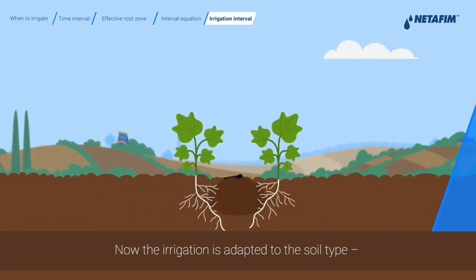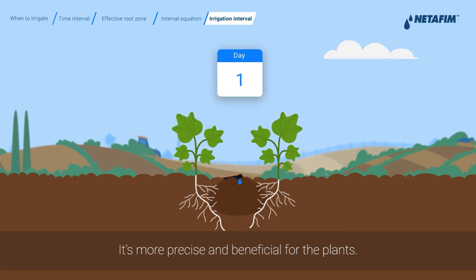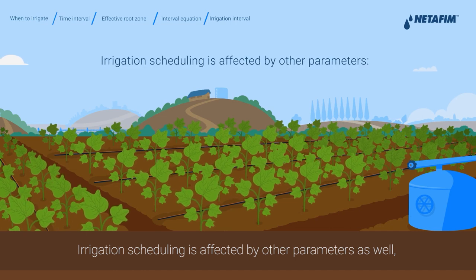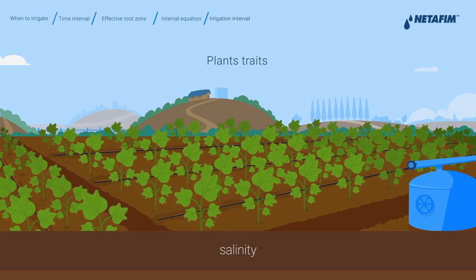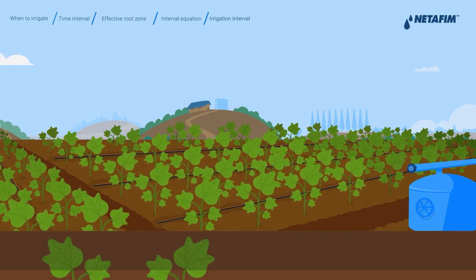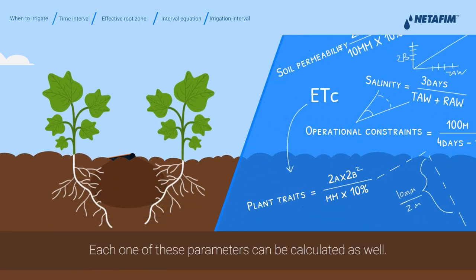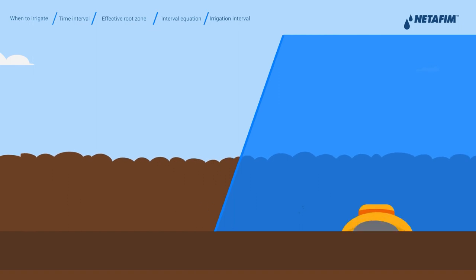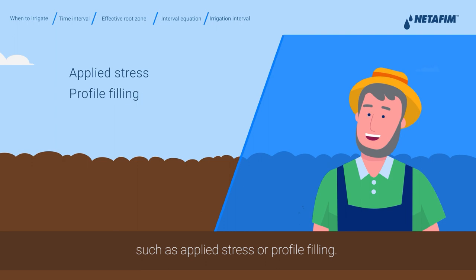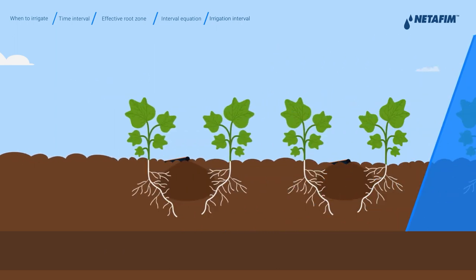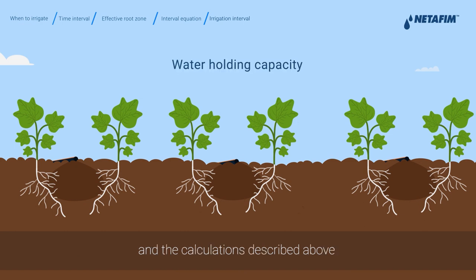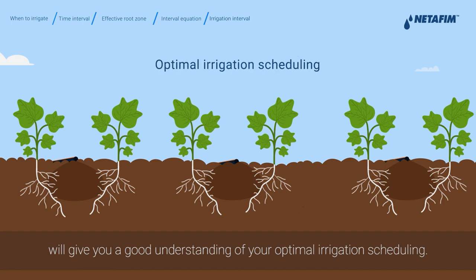Now the irrigation is adapted to the soil type — it's more precise and beneficial for the plants. Irrigation scheduling is affected by other parameters as well, such as plant traits, salinity, operational constraints, soil permeability, and others. Each one of these parameters can be calculated as well. The scheduling is also affected by agronomical decisions, such as applied stress or profile filling. But the leading parameter will be the water holding capacity of the soil, and the calculations described above will give you a good understanding of your optimal irrigation scheduling.